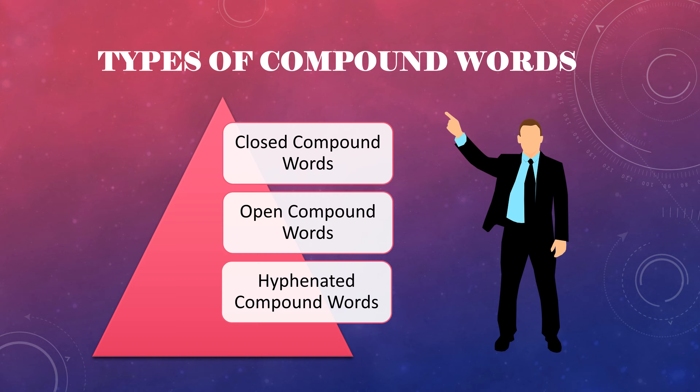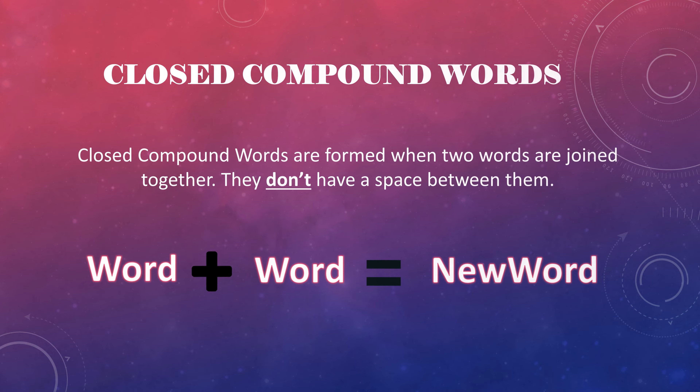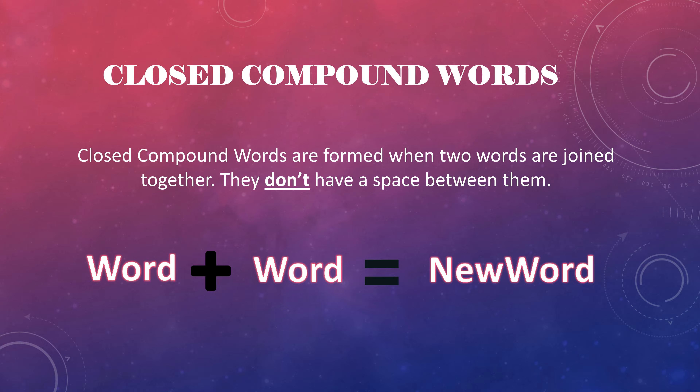But today, we will be only dealing with closed and open compound words. So, are you all ready? Let's start with closed compound words. Closed compound words are the words which are formed when two words are joined together and they don't have a space between them.